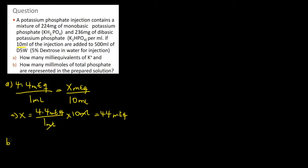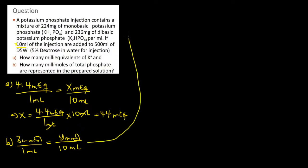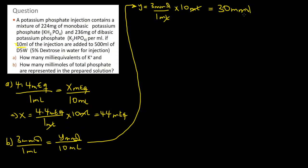For part B, we do something fairly similar, making use of the fact that there are 3 millimoles of phosphate in each milliliter. Again, we have a 10 milliliter volume, so we need to figure out how many millimoles are in that volume. Y equals 3 millimoles divided by 1 milliliter times 10 milliliters. The milliliters cancel, and you end up with 30 millimoles. That is the fast, expeditious way to do it.